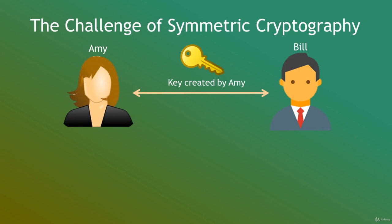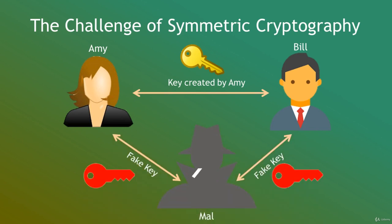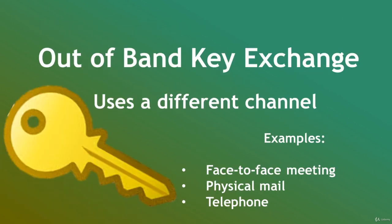If she sends it by email or some other unencrypted means, a third party like Mal might intercept the key in transit and use the key to eavesdrop on all subsequent communications between Amy and Bill. To compound the problem, what would Bill do once he received the key from Amy? He has no way of verifying that the key sent to him was in fact from Amy. If Mal is clever, he could impersonate Bill and send a fake key to Amy, then impersonate Amy and send a fake key to Bill. This would have the same effect as intercepting the key that Amy was originally sending to Bill legitimately, and Mal would be able to eavesdrop on all their communications.